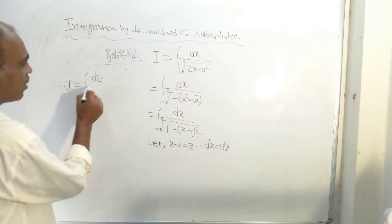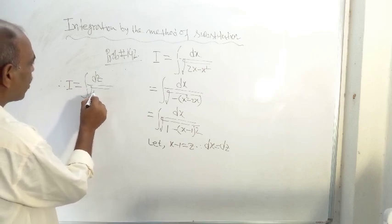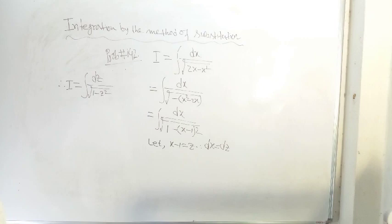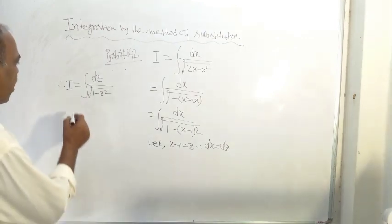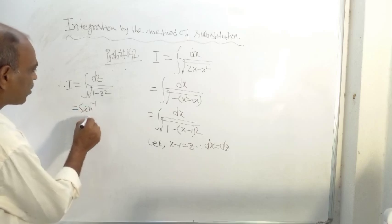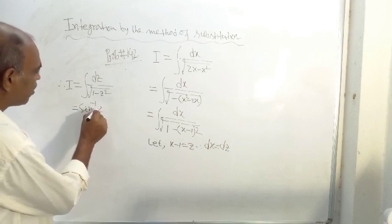Divided by root of one minus z square. The formula for this is known to you. This is not tan inverse, sorry, sin inverse z, not tan inverse. It is sin inverse z.